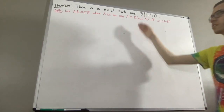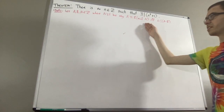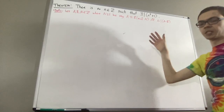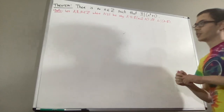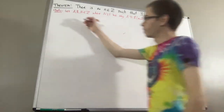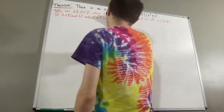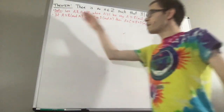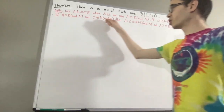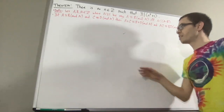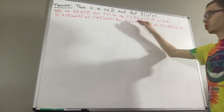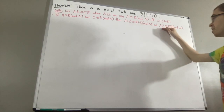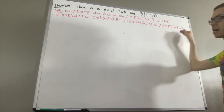Some other properties that this relation satisfies is compatibility with addition and multiplication. What I mean by that is: if a is congruent to b mod n and c is congruent to d mod n, then a plus c is congruent to b plus d mod n, and a times c is congruent to b times d mod n.